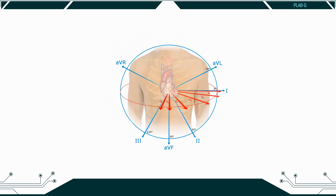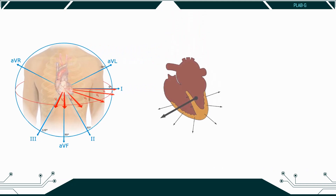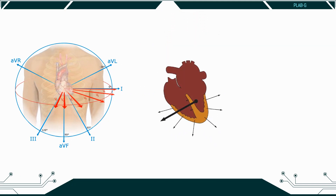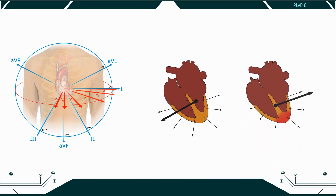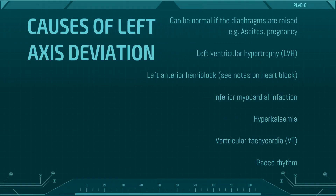Axis is the sum of all electrical activity in the heart. The contraction travels from the atria to the right and left ventricles. As the left ventricle is larger and more muscular, normal axis lies to the left at minus 30 degrees to 90 degrees. As a general rule, if the net deflections in lead 1 and AVF are positive, then the axis is normal. If lead 1 has net negative deflection whilst AVF is positive, then there is right axis deviation. If lead 1 has positive deflection and AVF has negative deflection, then there is left axis deviation. The causes of right axis deviation and left axis deviation are shown.